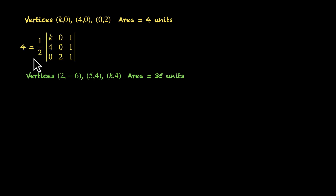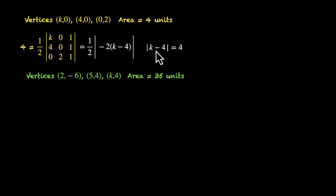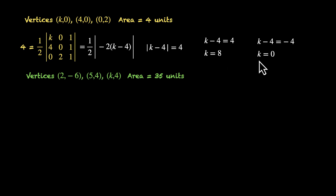Let's do this together. Area = half × |det of k, 0, 1 / 4, 0, 1 / 0, 2, 1| = 4. Expanding along the second column (signs –, +, –), we get –2×(k – 4) = the determinant value. So half × |–2(k – 4)| = 4, which simplifies to |k – 4| = 4. Either k – 4 = 4 giving k = 8, or k – 4 = –4 giving k = 0. Both values give an area of 4 units.